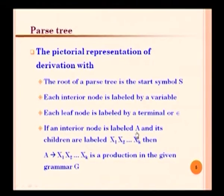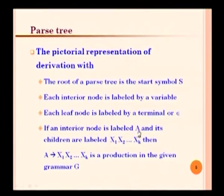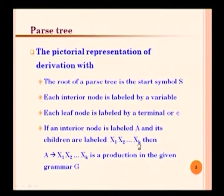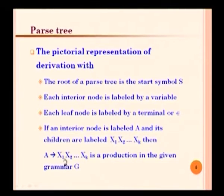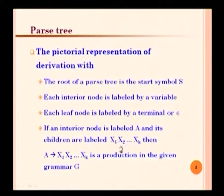If an interior node is labeled A and its children are labeled x1, x2, up to xk — where A is always a variable, and x1 through xk can be variables or terminals — then there must be a production A → x1 x2 ... xk in the grammar. The root has the start symbol, leaf nodes have only terminal symbols, and interior nodes can have any number of variables.